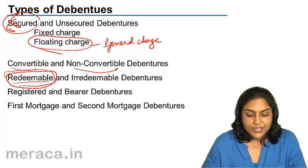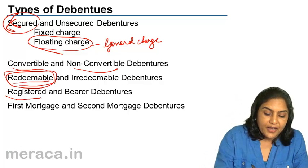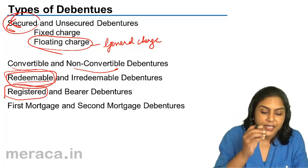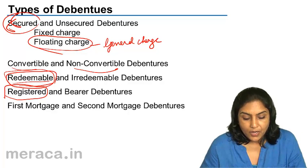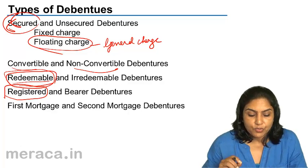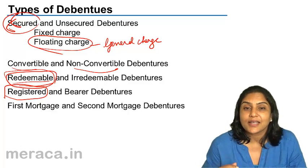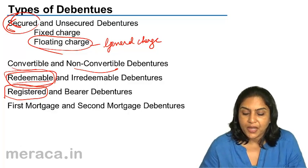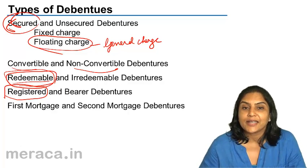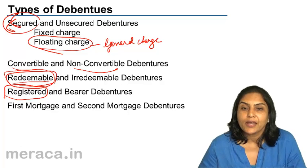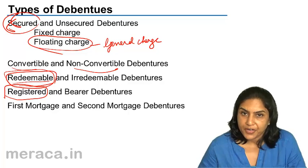Debentures may also be registered or bearer debentures. When they are registered, they are entered into the register of debenture holders in the books of the company, and only the registered holder receives interest. If they are bearer debentures, any person who holds the certificate is entitled to the interest and to repayment when the debentures are redeemed.